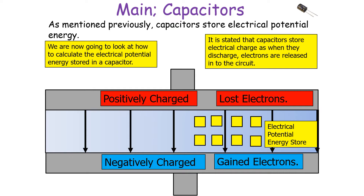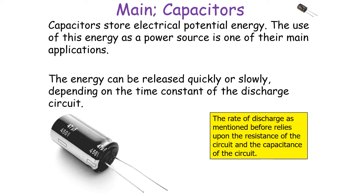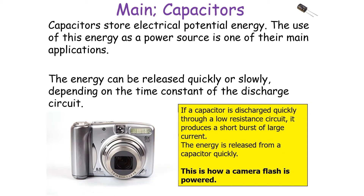We'll now look at how to calculate the electrical potential energy stored in a capacitor. Capacitors store electrical potential energy, and the use of this energy as a power source is one of their main applications. The energy can be released quickly or slowly depending on the time constant of discharge. The rate of discharge relies upon the resistance of the circuit and the capacitance of the capacitor. If a capacitor is discharged quickly through a low resistance circuit, it produces a short burst of large current — this is how a camera flash or defibrillator is powered.